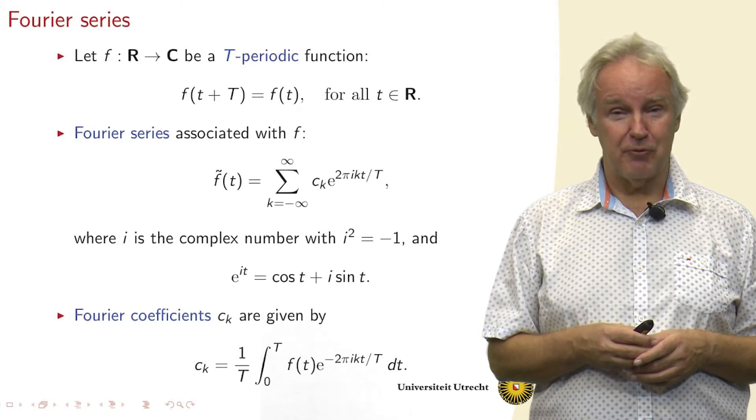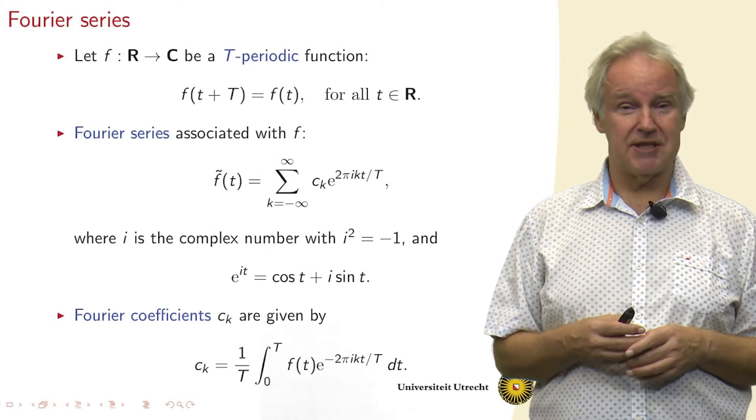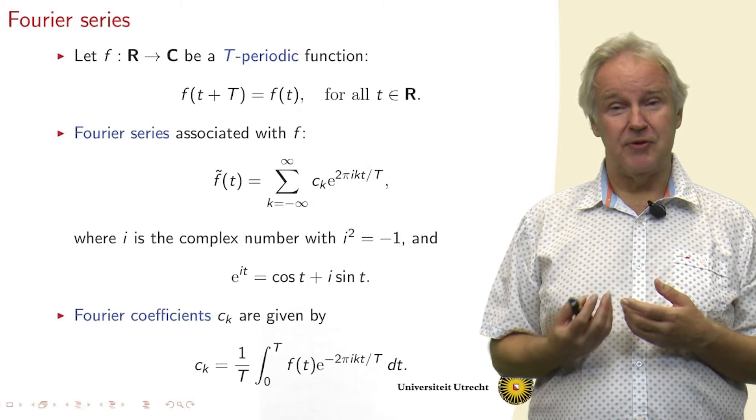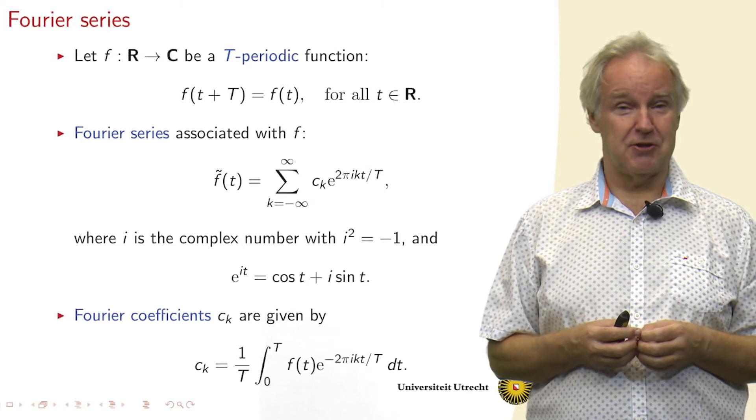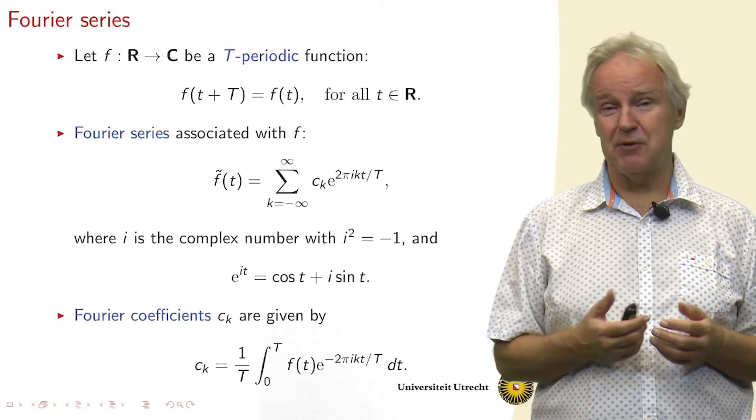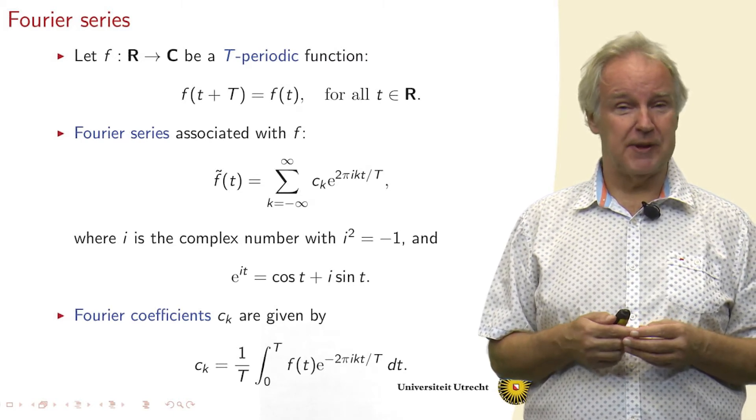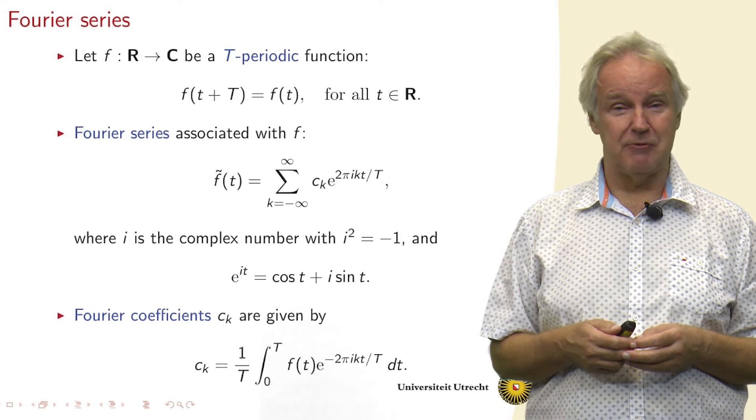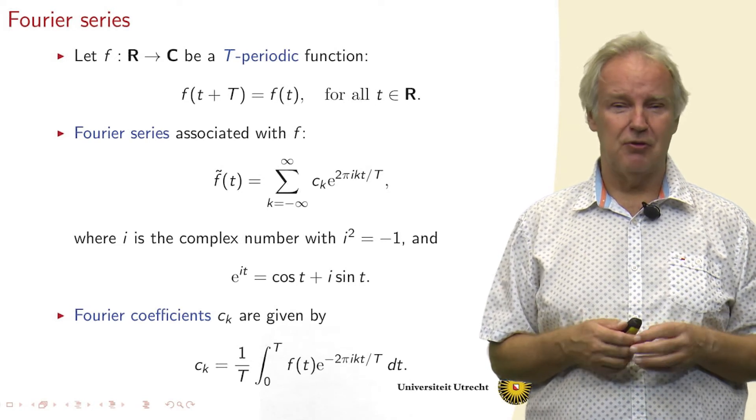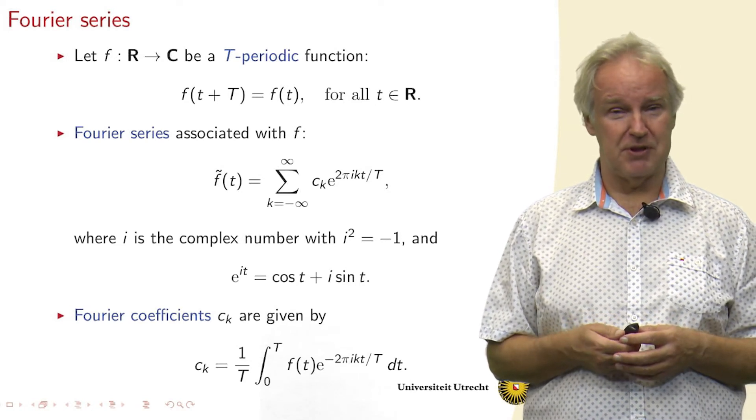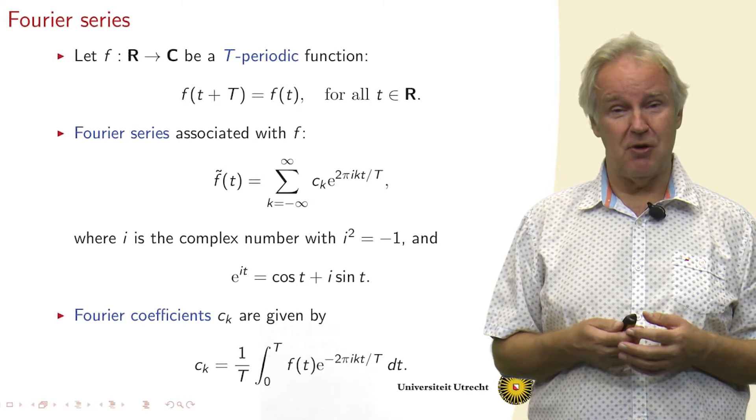So the Fourier series expresses the decomposition that we just saw. So assume we have a well-behaved periodic function. So the function value in t plus capital T equals the function value in t for all t in real numbers. And the function may be complex.